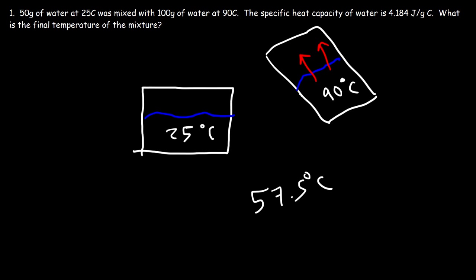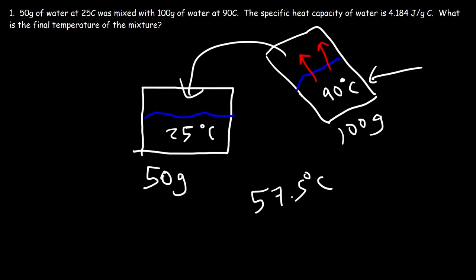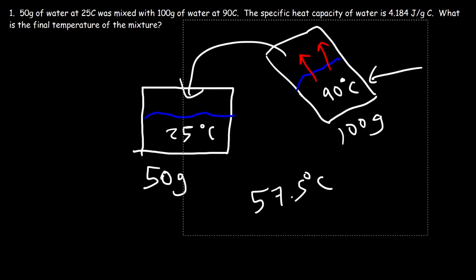Now if the masses of these two samples of water were equal, then the final temperature will be right in the middle. But they're not equal. The cold water sample is 50 grams, and we have 100 grams of the hot water sample. So because we have more of the hot water sample, the final temperature is going to be greater than 57.5 but less than 90 — closer to 90. So once we pour this in, we're going to get a final temperature of something above 57.5.